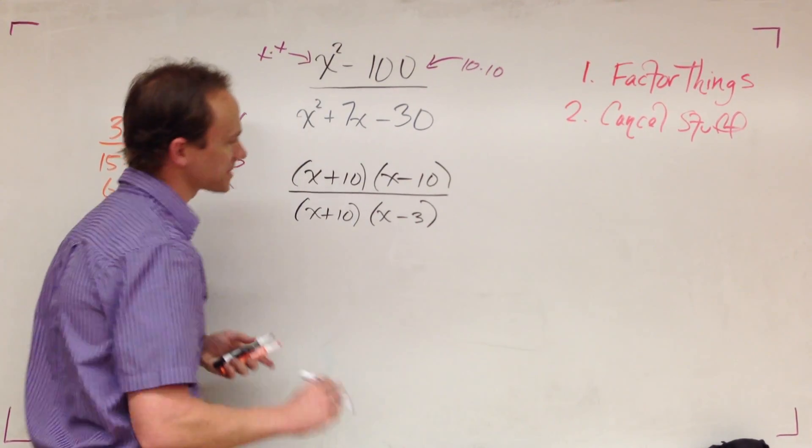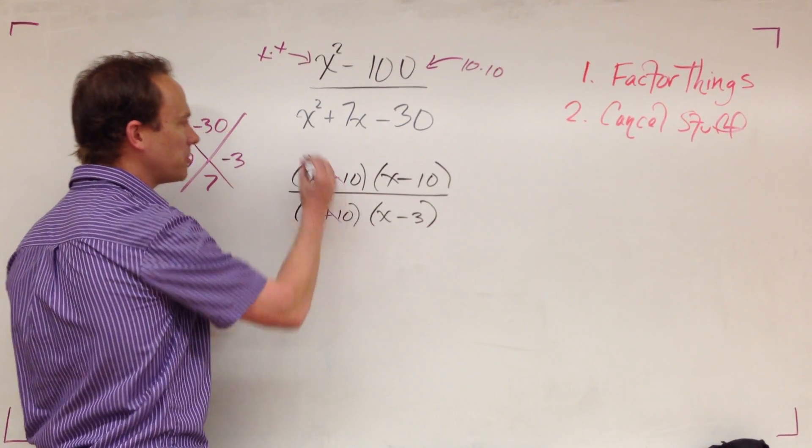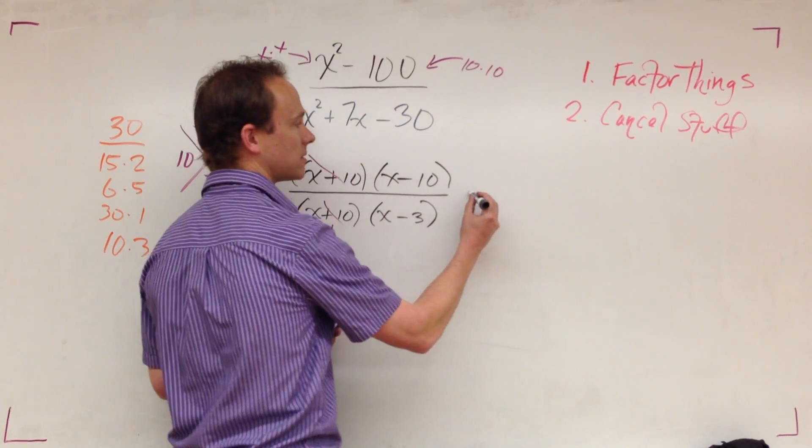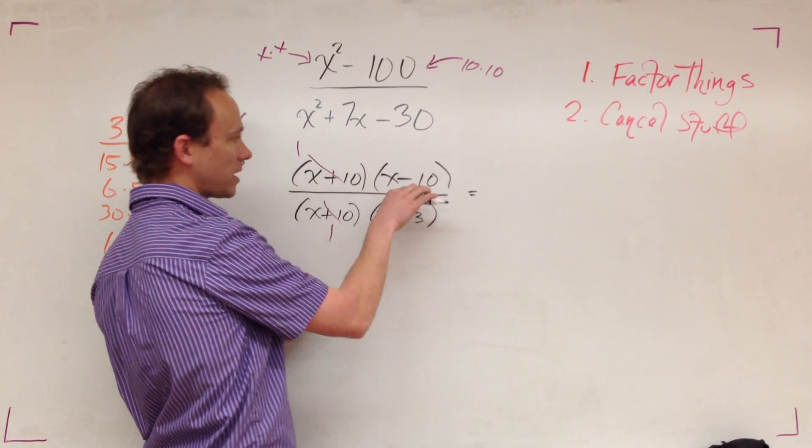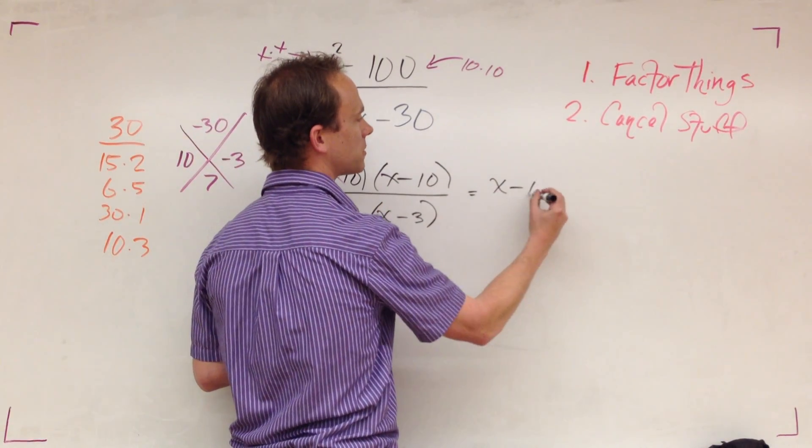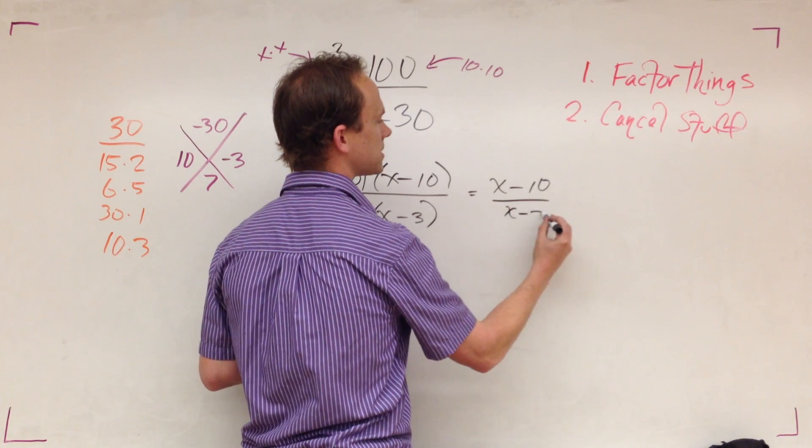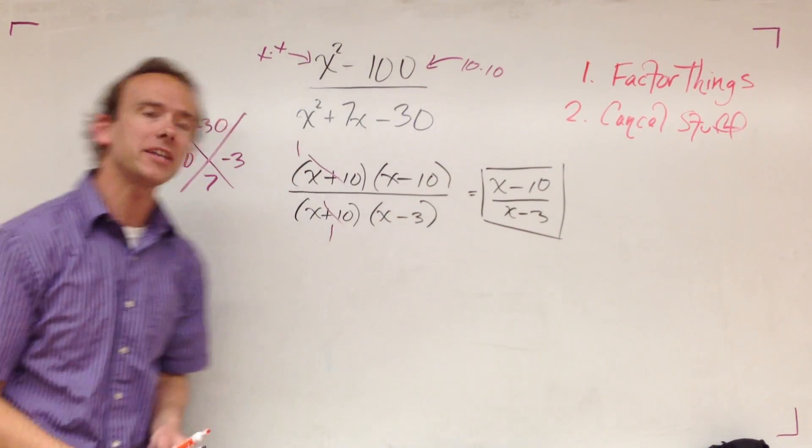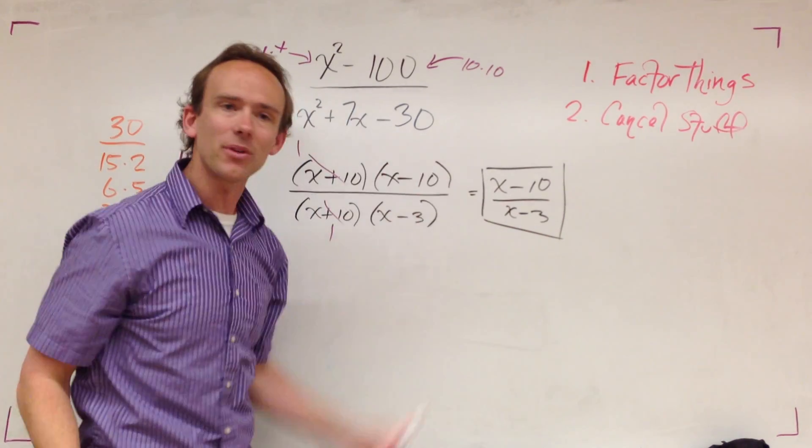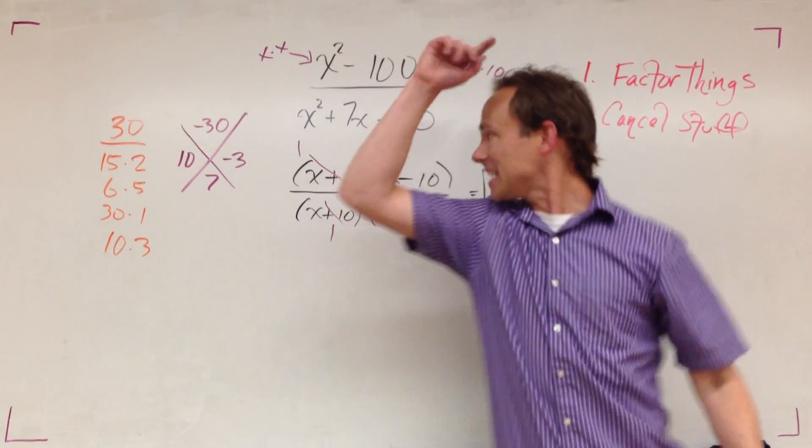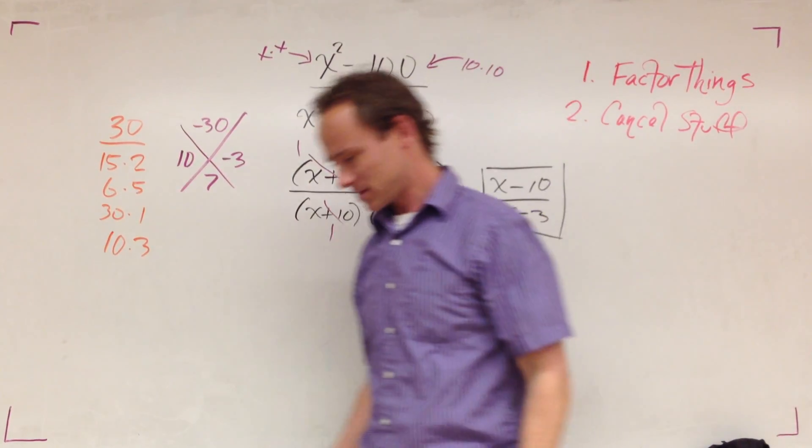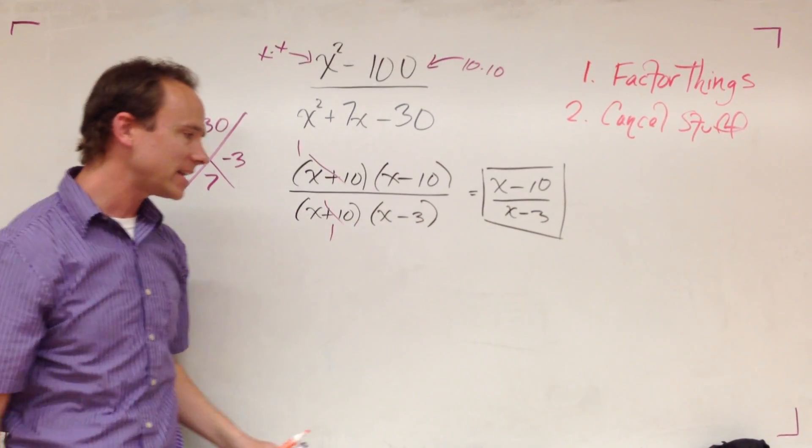We factored things, meaning the numerator and denominator. Now it's time to cancel some stuff. x minus 10 is left over, x minus 3 is left over. That's what we're talking about. That's the right answer. It's the right answer today, it will be the right answer tomorrow, next week it will still be the right answer.